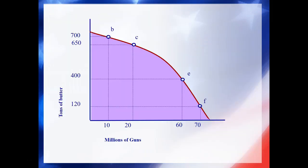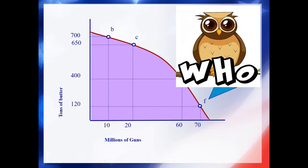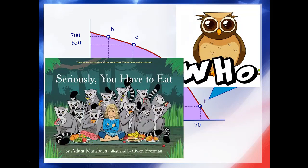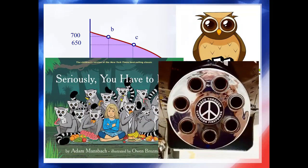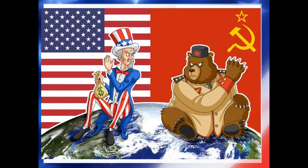The more guns we produce, the less butter will be produced. The consideration of 'who' comes into play — who will benefit by making guns, and who will benefit by making butter? Certainly we need to eat, but we also need to maintain security against our enemies, foreign and domestic. Looking at the world in 1983, we had a need, some might argue, for more guns than butter. Looking at the world now, we see that we don't have any real big enemies, but we have a bunch of little ones.